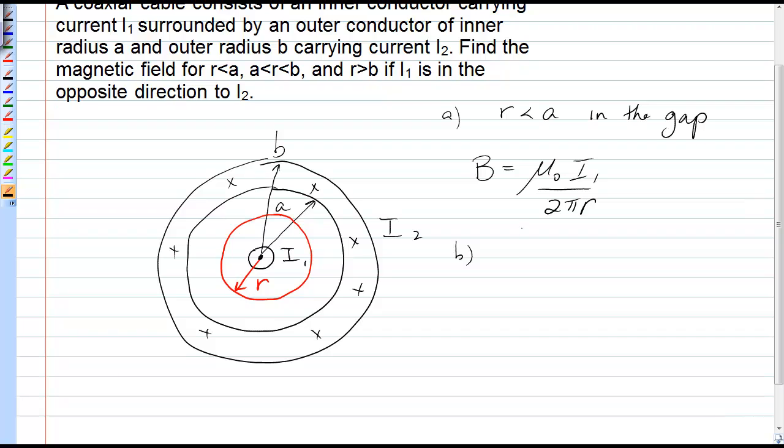Okay now let's go inside this outer conductor. So for r greater than a but less than b, we're now inside this outer conductor where there are magnetic field lines, but we're now only capturing a portion of I2, not all of I2, and we still have to count I1.